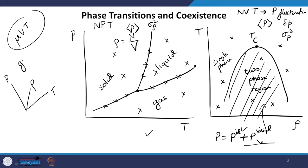We will discuss how we can generalize our Monte Carlo scheme from the NVT ensemble to the NPT ensemble, and then more importantly how we can generalize to the grand canonical ensemble. The particular scheme we are aiming at is called the grand canonical Monte Carlo — GCMC.